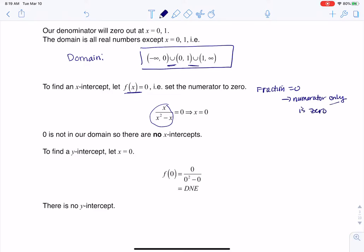When I set that equal to zero, my numerator is x, so I get x equals zero, which is great, except zero was not in my domain. Since the only number I'm getting is a number that's not in my domain, there are no x-intercepts.